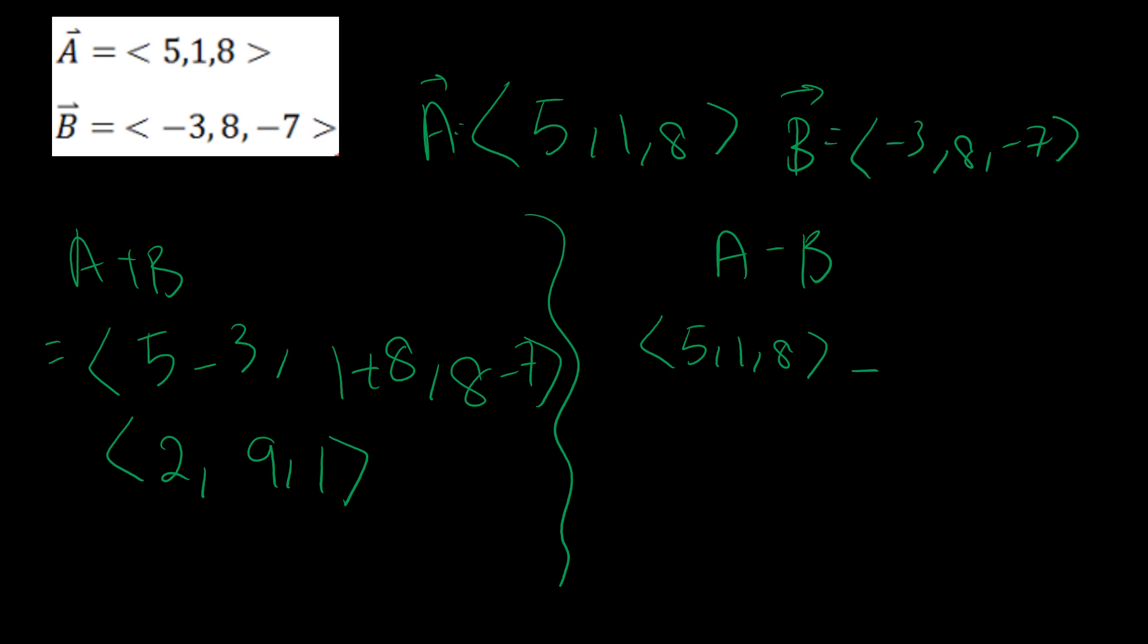Now for subtraction, a minus b. Don't forget the negative, it's very important. 5 minus negative 3, 1 minus 8, and 8 minus negative 7, which gives (8, -7, 15). This is my answer for a minus b, and (2, 9, 1) is my answer for a plus b.